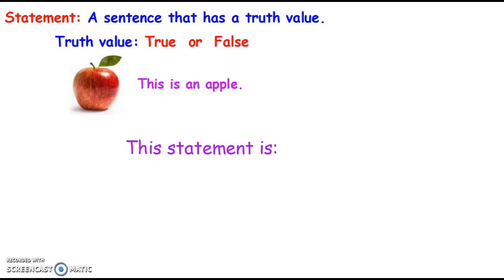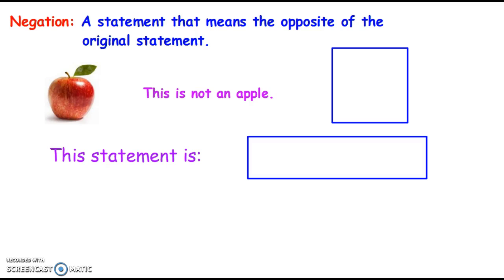So look at your picture there. This is a picture of an apple. When I make the statement 'this is an apple,' this statement has a value of true because it is an apple. Now, a negation is a statement that means the opposite of the original statement. My original statement was 'this is an apple,' so my negation is 'this is not an apple.' Obviously this statement is false because it is a picture of an apple. So because my original statement was true, the negation is false.